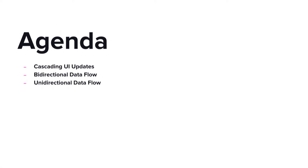During today's talk, we're going to talk about what it takes to build a reliable and testable user interface for our users. We're going to start with cascading UI updates, which is the context for why we need some kind of data flow system in our application. And then we'll talk about two different ways of managing the data flow: bi-directional data flows and unidirectional data flows.